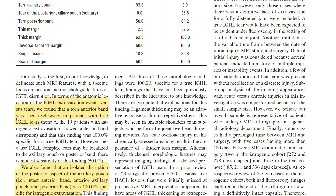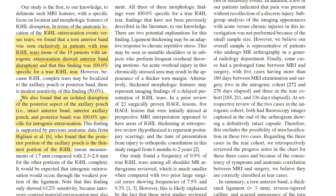If the anterior band is torn, you are really dealing with a true lesion. This is confirmed in the study: all 19 patients with iatrogenic extravasation had an intact anterior band — making this a very specific sign. Additionally, isolated disruption of only the posterior aspect of the axillary pouch, with intact anterior and posterior bands and the anterior axillary pouch, indicates iatrogenic extravasation. This is supported by Biliani's study showing the posterior portion of the axillary pouch is the thinnest part of the inferior glenohumeral ligament complex.